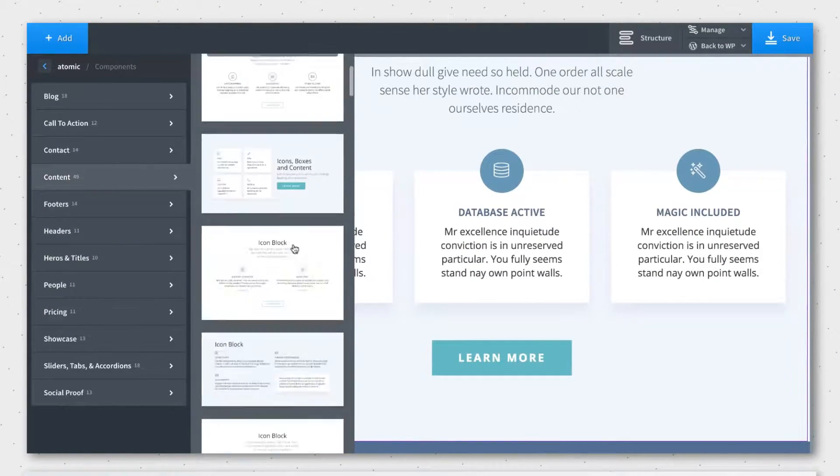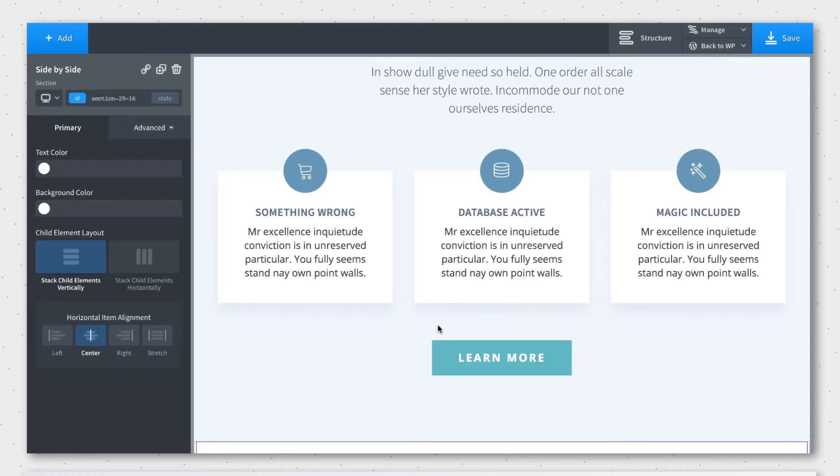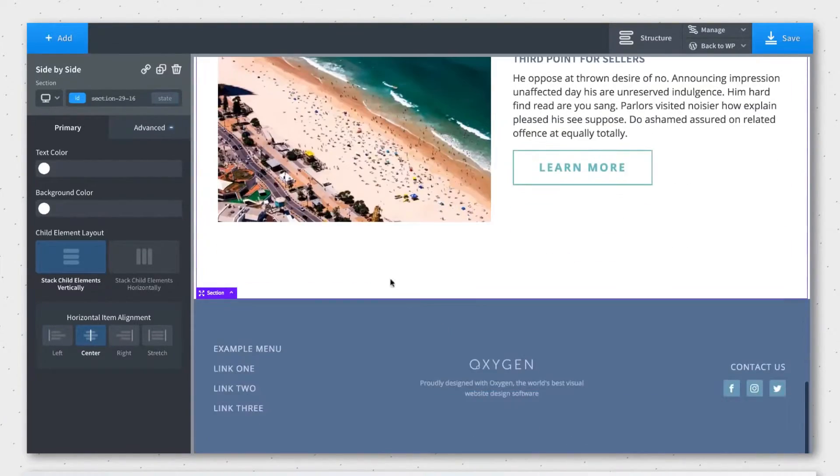Now let's move on to the second builder on our list, the Oxygen Builder, launched in 2016. Oxygen is very feature-rich, so if you're looking to build a unique and complex website without writing a single line of code, Oxygen is definitely the one for you.